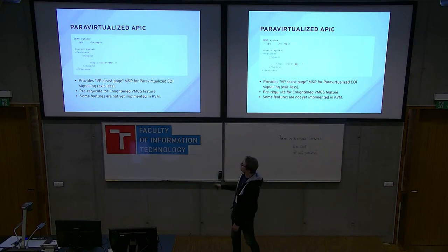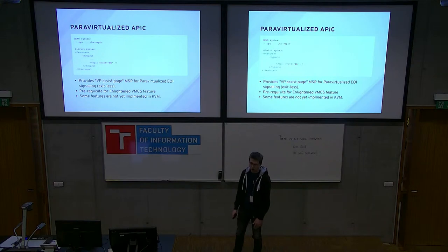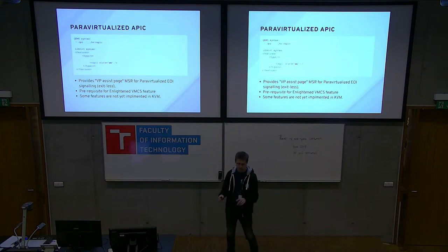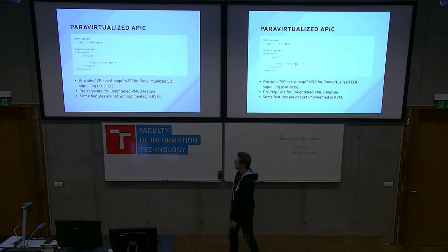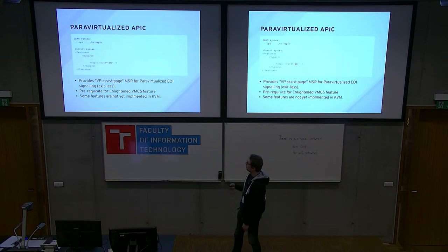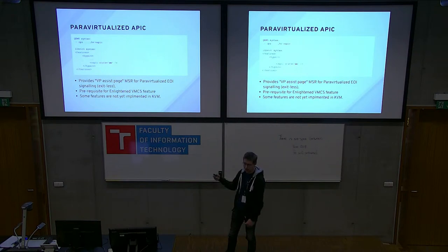Another enlightenment is called virtual APIC, hv-vapic. It's an assist page: for every CPU, your guest maps one page shared between the guest and the hypervisor, and uses it to speed up some APIC features. The most important one is paravirtualized end-of-interrupt. This is a good example of why emulating a hardware interface isn't fast — if there is a level-triggered interrupt with a pending bit in a register, it gets signaled to your guest.